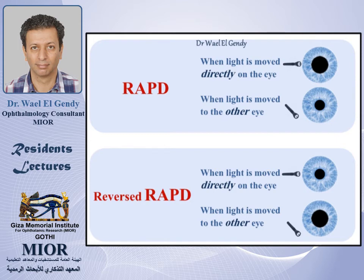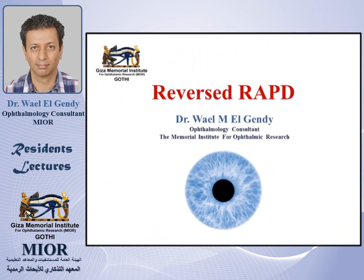To summarize: when you have a relative afferent pupillary defect, when the light is moved directly onto the eye with the defect, it dilates; when moved to the other eye, the defective eye constricts. In the reversed relative afferent pupillary defect, when you move the light directly to that eye, the pupil constricts; but when you move the light to the other eye, the pupil dilates — it is the opposite of what happens with a relative afferent pupillary defect. This concludes our explanation and I hope it was helpful and useful to everybody. Thank you.